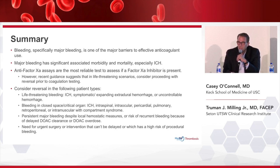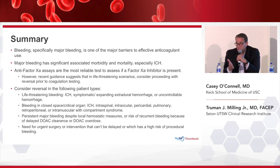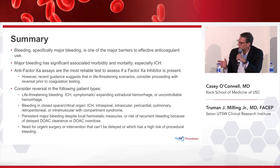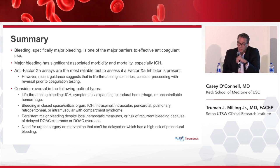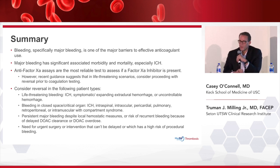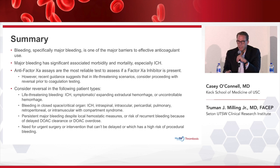We're used to using time as a surrogate in the stroke world — that's how we decide when to give tPA for acute stroke. So we use time in the setting of factor Xa inhibitors: did they take it in the last day? Then we can use qualitative tests — for rivaroxaban, the PT is a little elevated. For dabigatran, if you don't have the thrombin time, you can look at the PTT. Then you have to decide: is the anticoagulant contributing to this bleeding scenario, or are they just bleeding? Because people bleed without anticoagulants.